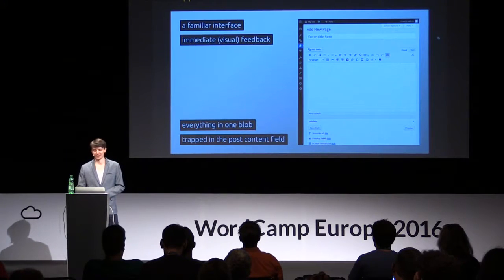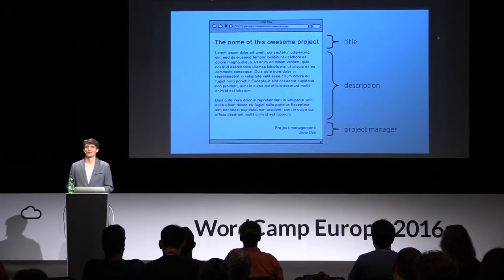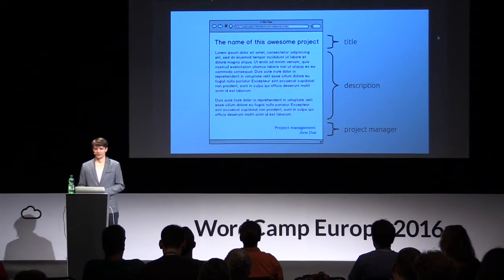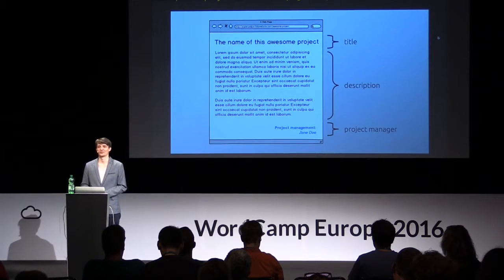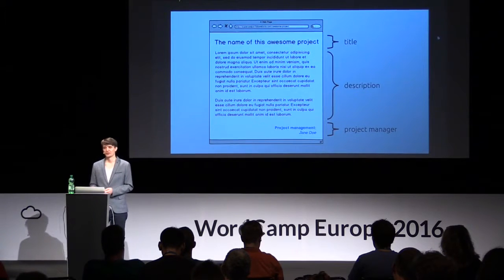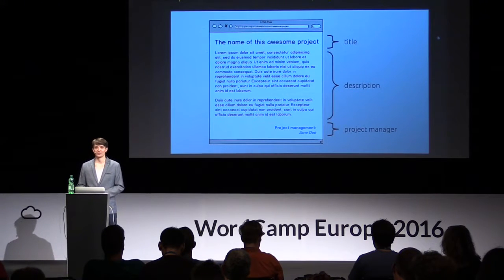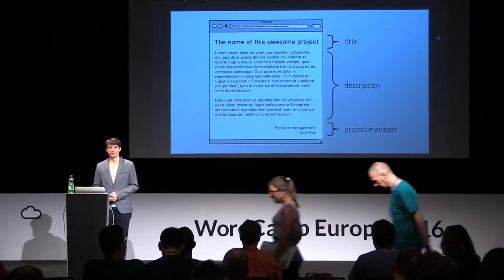Let's have a look at an example. Imagine you have this very simple portfolio website where each project has its own page. It's very basic — just a title, a description, and the name of the project manager for that project below. So how do we do that in WordPress? Well, you just create a new page, type the description in the editor, put the name of the project manager below and you're pretty much done.